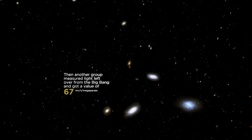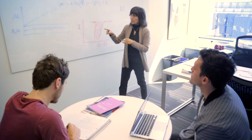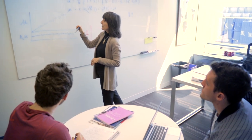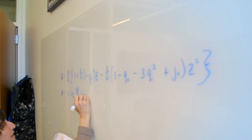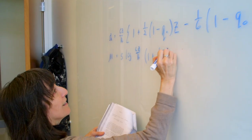We find ourselves with a discrepancy. There are several possibilities. One is there's an error in one or both of the experiments. Or both measurements could actually be correct, and it's telling us something about the universe.